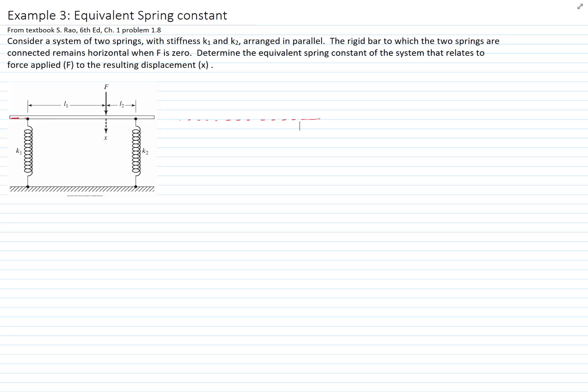As soon as we apply a force, there is a displacement of the bar. If this is our initial position, we will have a displacement which involves also a rotation of the bar. Let's name this quantity X1, the deflection of the first spring, and this quantity X2, the deflection of the second spring. Where I apply the force F, I will call that X.